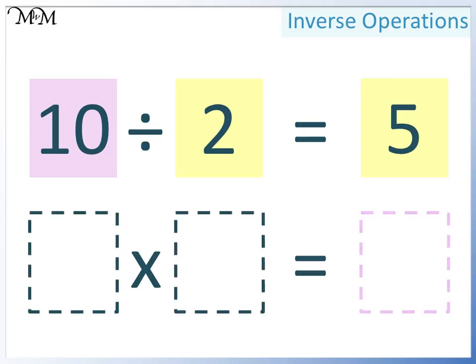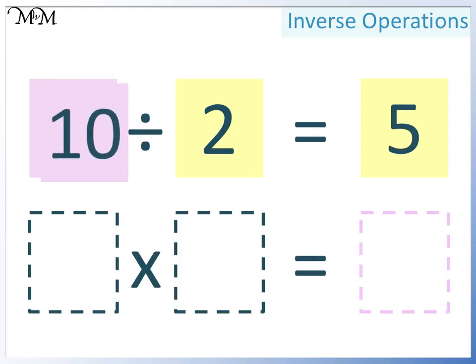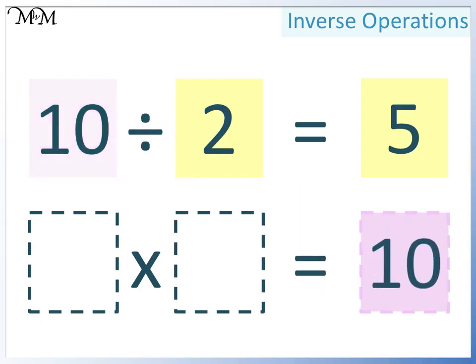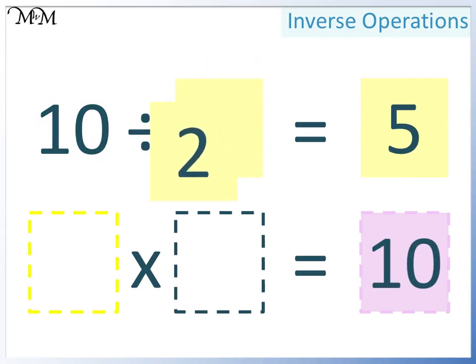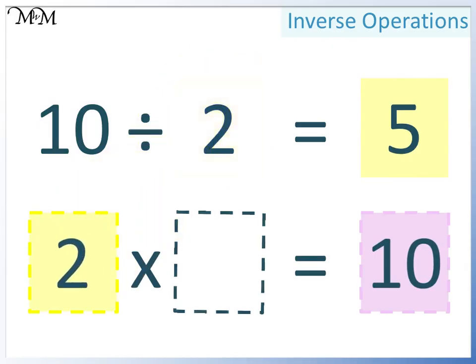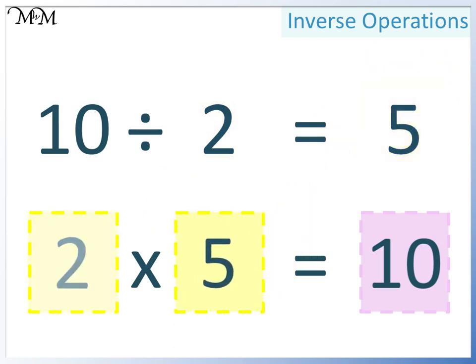So the largest number must go here. The largest number is 10. Here we can have either of the two smaller numbers — this time we'll have 2. And so 5 can go here. 2 times 5 equals 10.